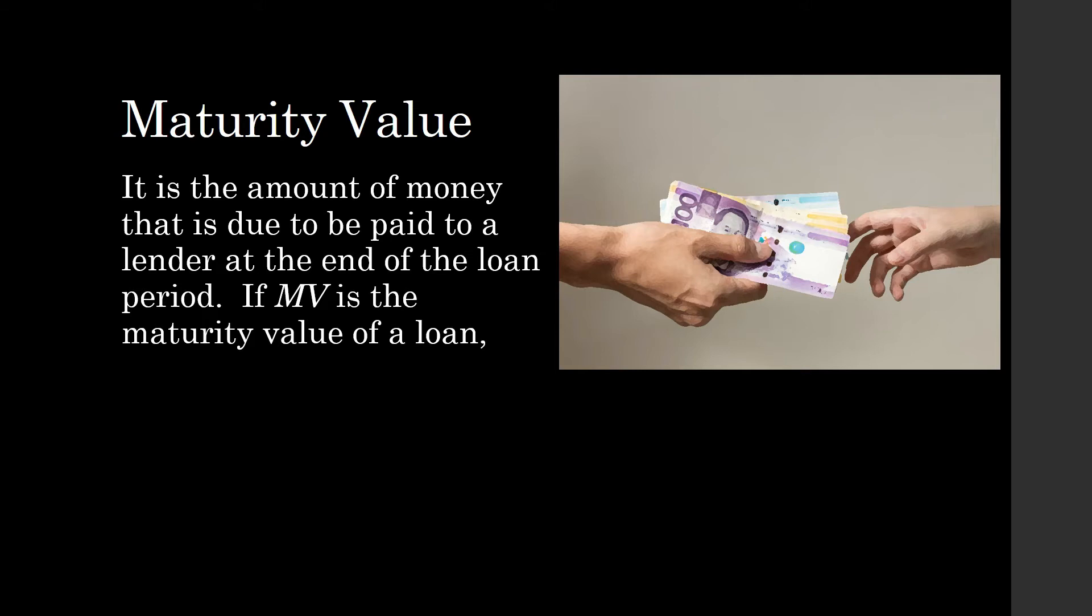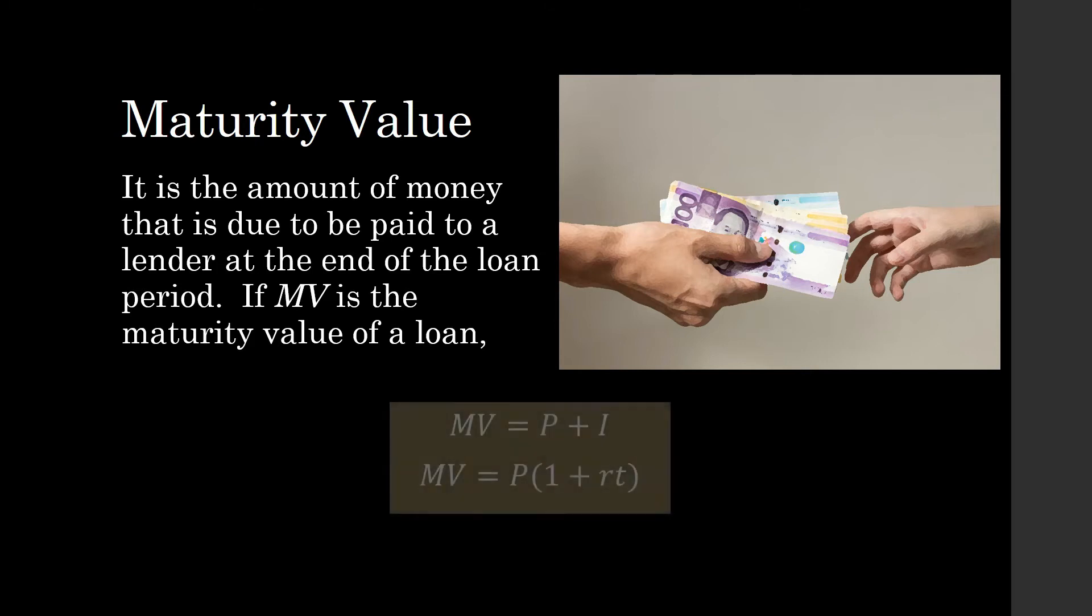If MV is the maturity value of a loan, then it is equal to P + I, which is equal to P times the quantity 1 plus R times T.